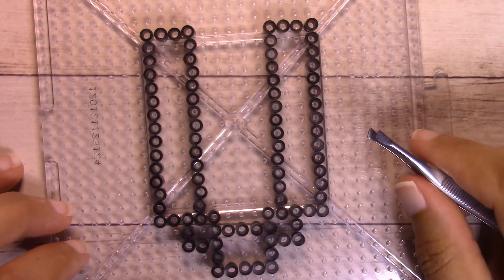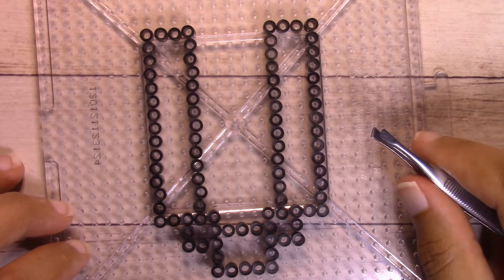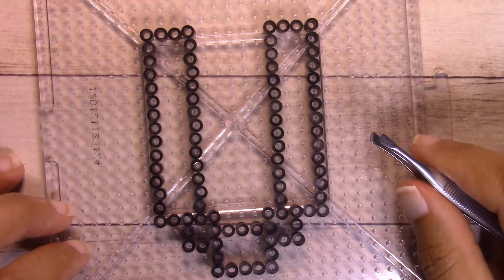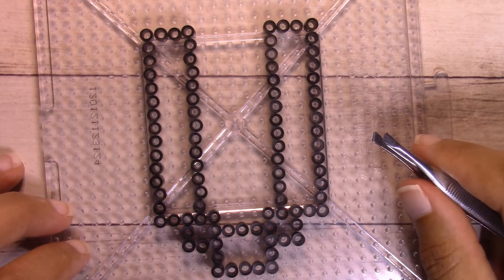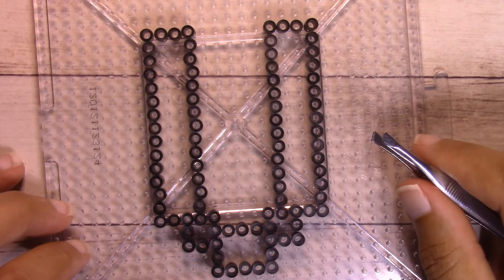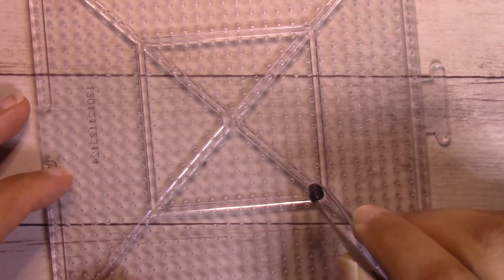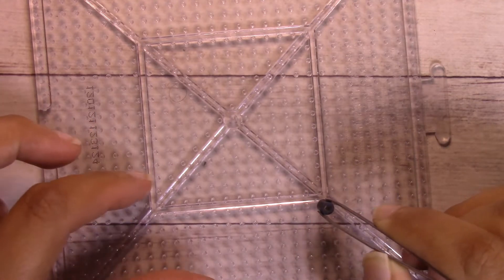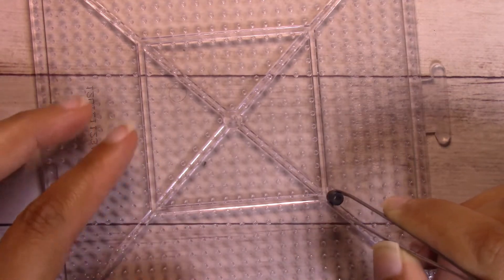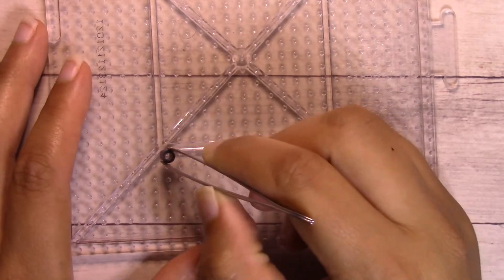If you'd like to follow along, I have a chart for this that I'll link in the description box below. Let's go ahead and get started. I'm going to start on the bottom of the left leg, so I'm just going to place a bead here.